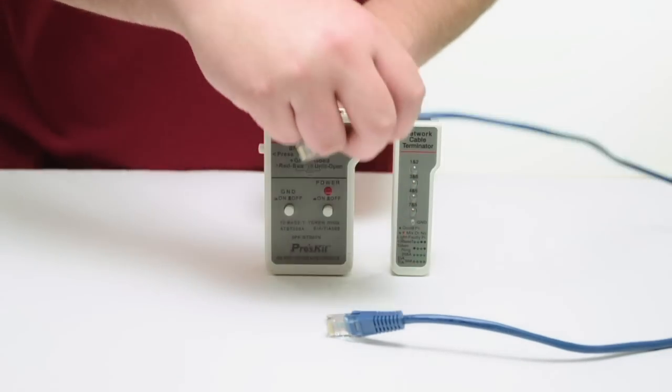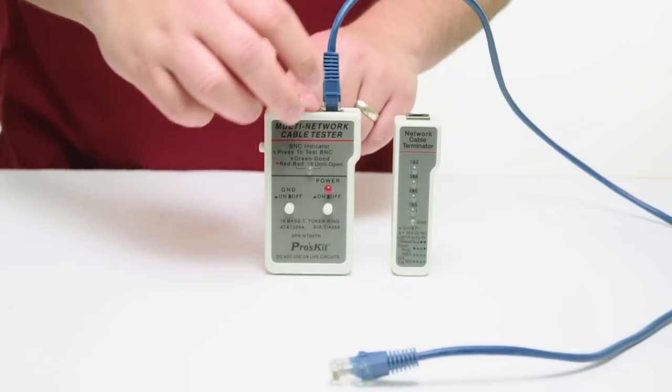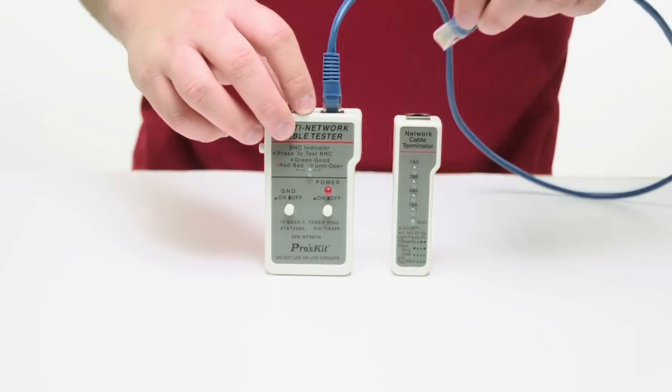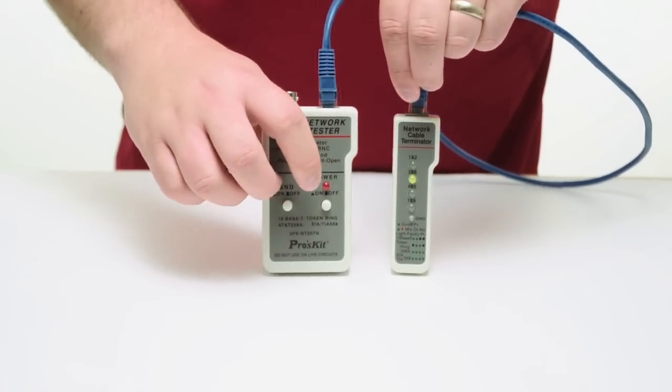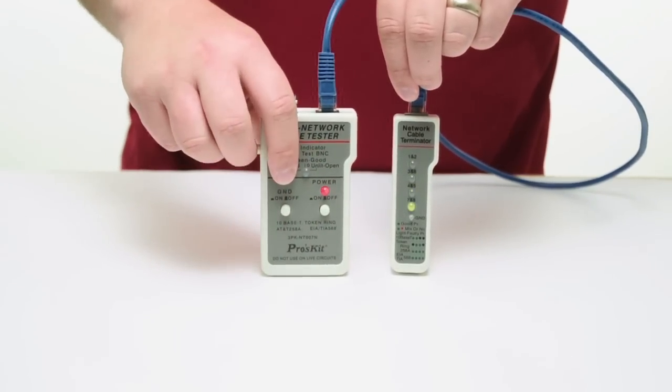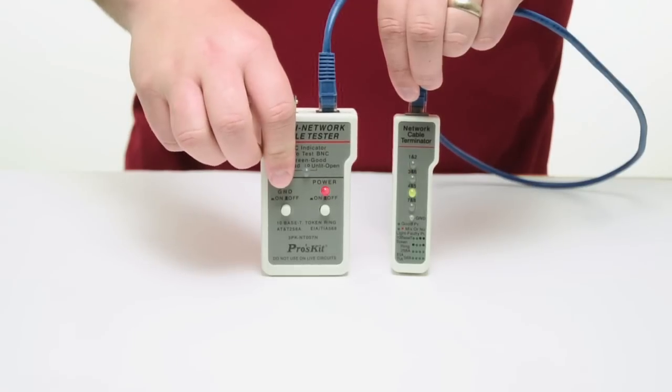To test an Ethernet cable, plug one end of the cable to the jack of the master unit and the other end to the remote terminator. When the power is on, the remote terminator will quickly auto-scan for wire continuity, miswiring and polarization.